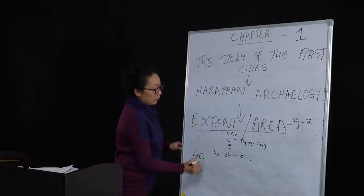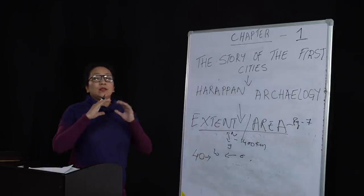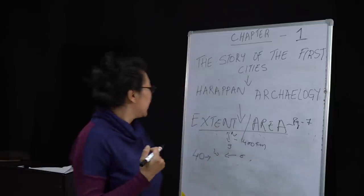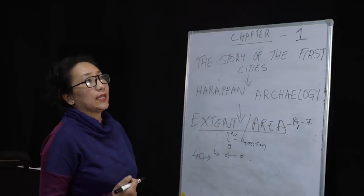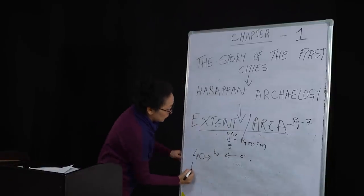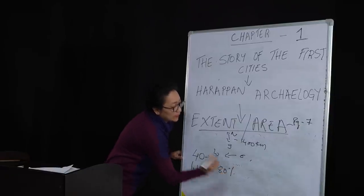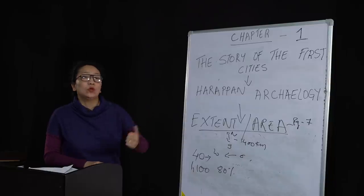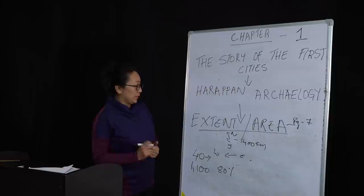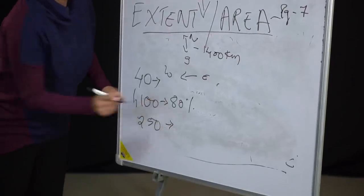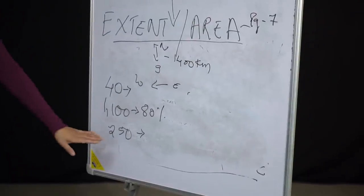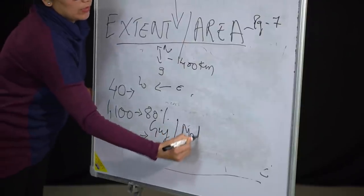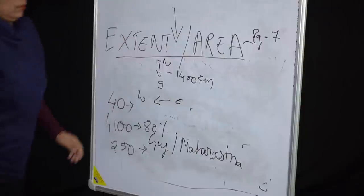Out of the 1400 settlements, 40 are located around the Indus River and its tributaries. Around 1100 settlements — about 80% of the total — were located between the Indus and the Ganges and a little beyond the Saraswati River. The remaining 250 settlements were located in the Saraswati area extending up to Gujarat and Maharashtra.